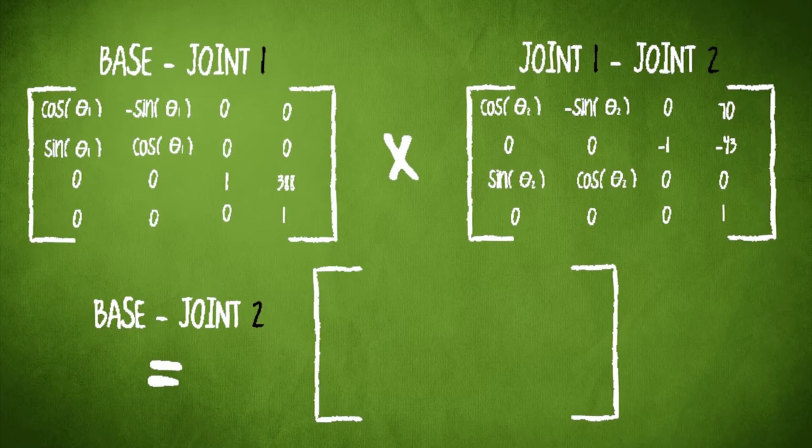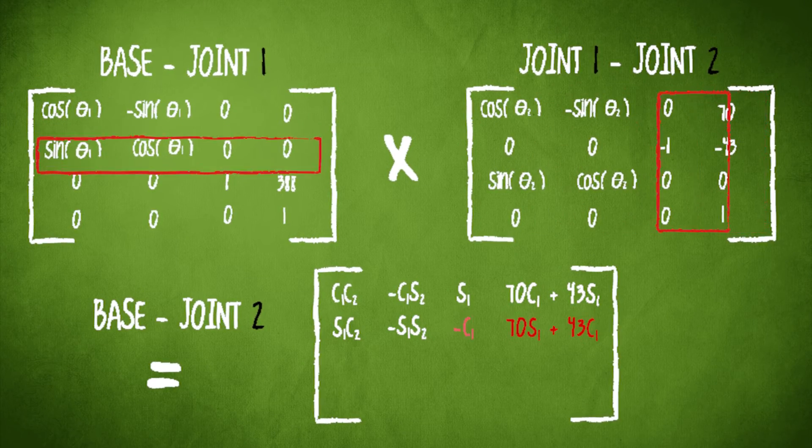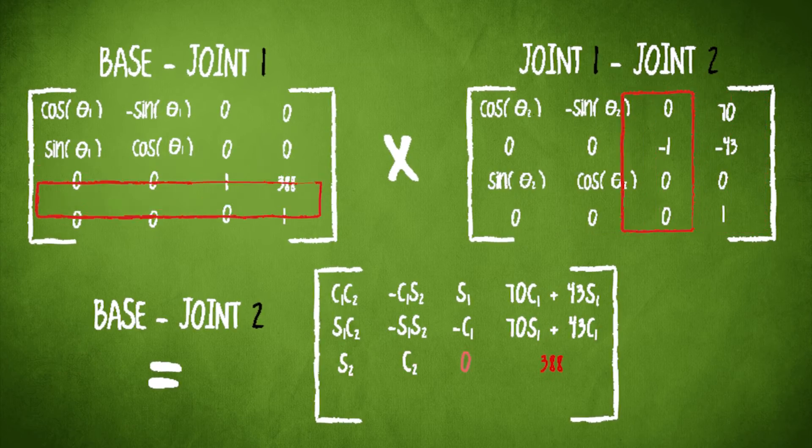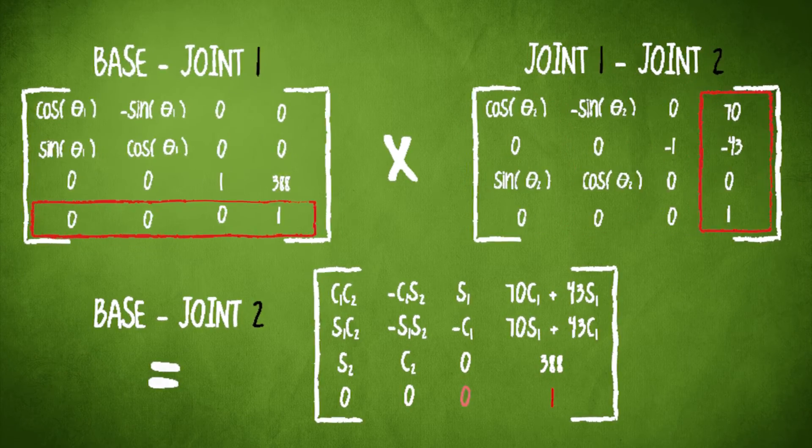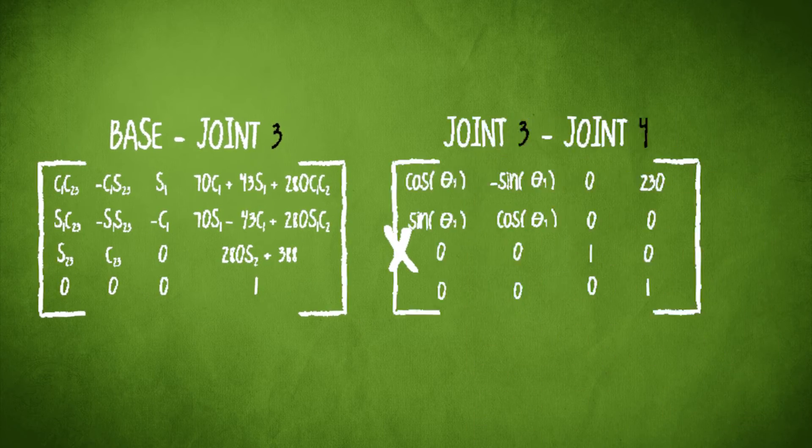By multiplying the matrices together, we create a mathematical model of the robot arm in a single matrix form. Here you can see the process of multiplying the first and second matrices together. This process is then applied to the remainder, gradually combining until we have a single matrix.